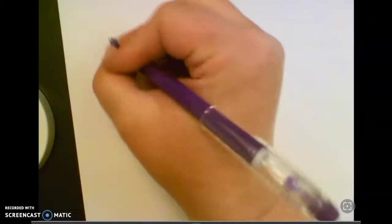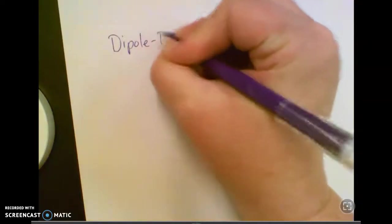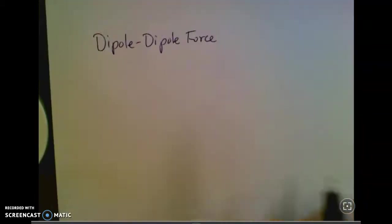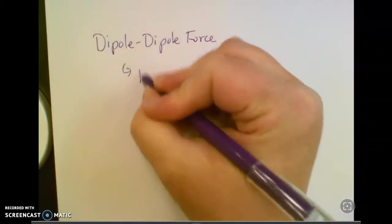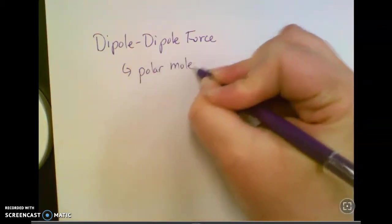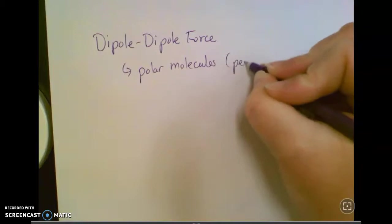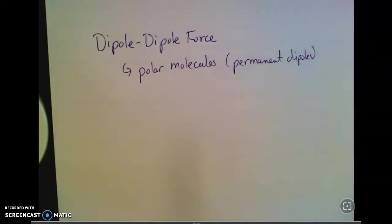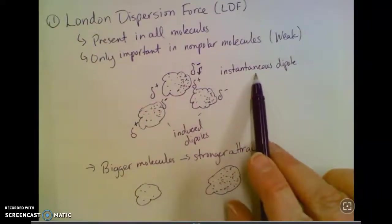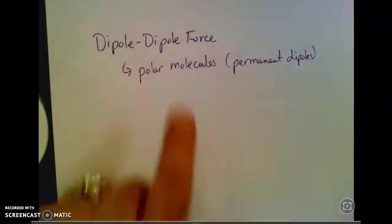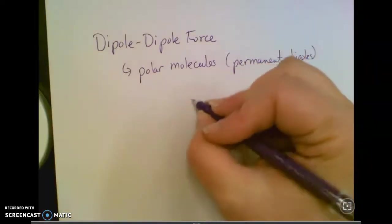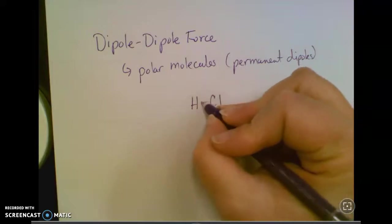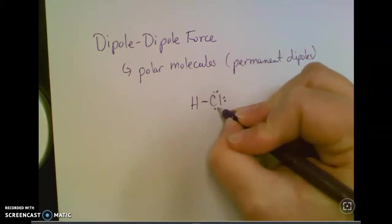The other type of intermolecular force is a dipole-dipole force. This happens with polar molecules. Here we said these are instantaneous and induced dipoles that come and go. But if you've got a polar molecule, like HCl, we know that it's a polar bond, and this molecule happens to be linear, so it's easy to look at.